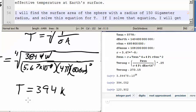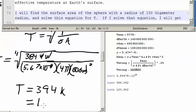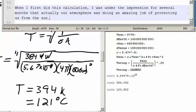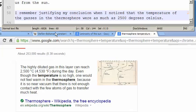We get a temperature of 394 kelvin. That is, if I subtract 273.5, that comes out to be 121 degrees Celsius. Really, really hot. When I first did this calculation, I was under the impression for several months that our atmosphere was doing an amazing job of protecting us from the sun.